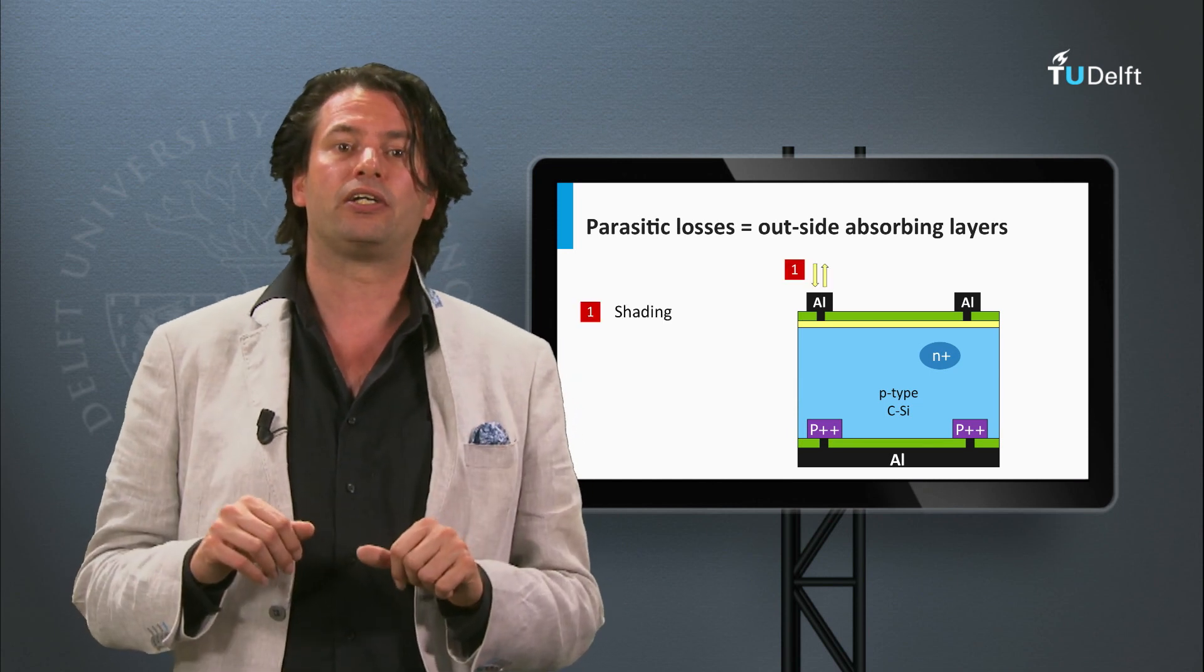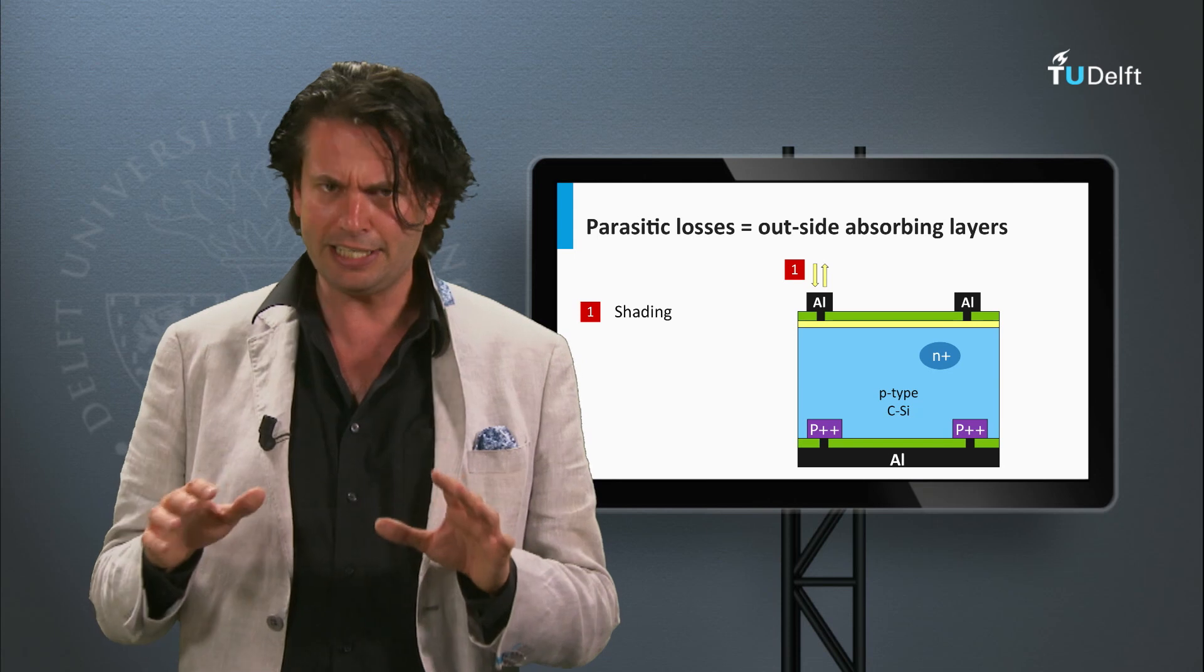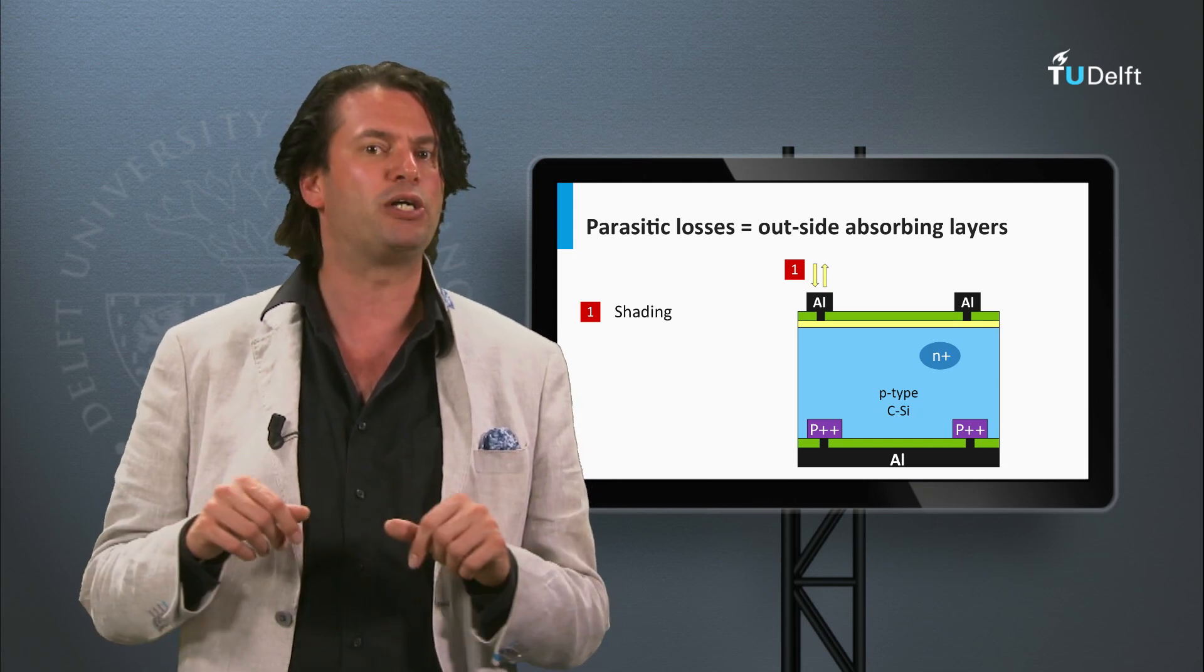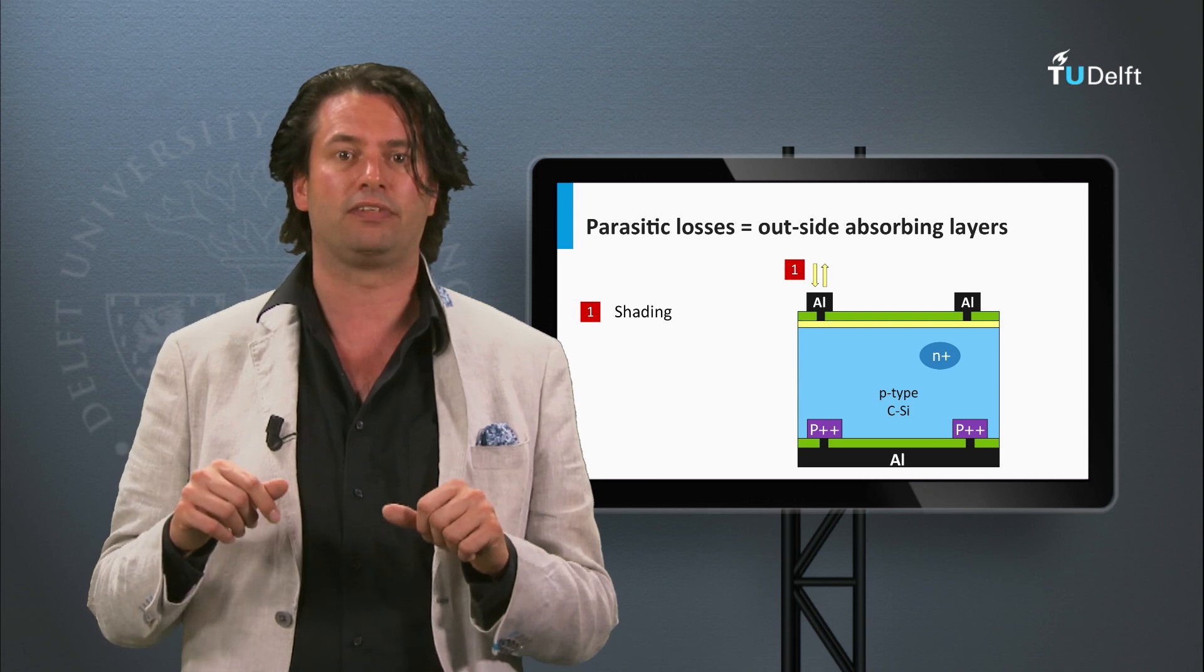First we consider the metal contacts. These contacts shade a certain area, preventing light to be absorbed in the PV active layers.